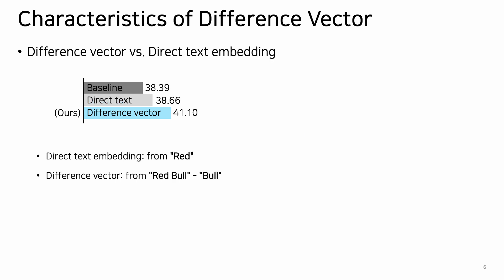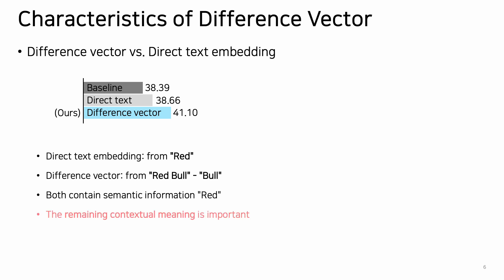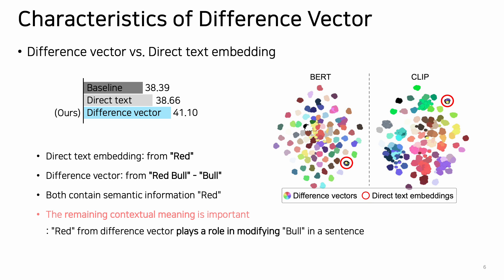Next, we compare our difference vector with the direct text embedding, which is from a single attribute word. Both contain semantic information, but the accuracy of the difference vector is much higher than the direct one. This demonstrates that the remaining contextual meaning is important. In other words, 'red' from the difference vector contains the role of modifying 'ball' in a sentence, while 'red' from the direct embedding contains just the noun 'red'. This is also shown in the TSNE plot. The direct text embedding for the attribute yellow is represented as a single point, but the difference vectors for yellow from different classes are represented as clustered multiple points. We think this slight difference in the cluster is rooted from the remaining contextual information.